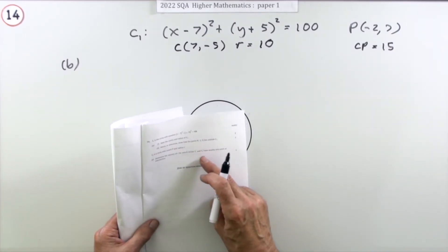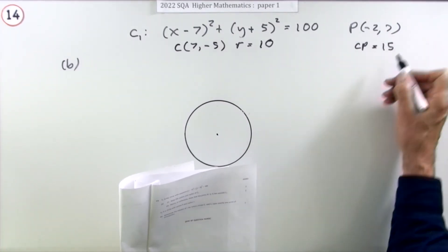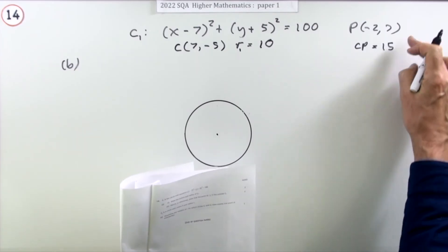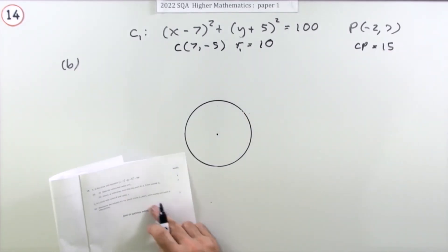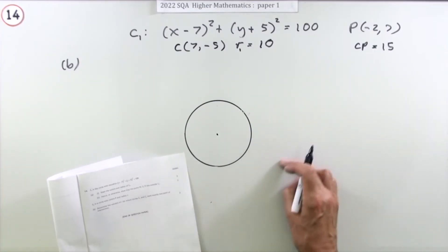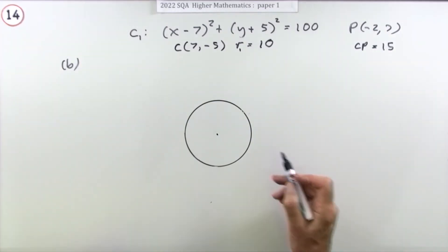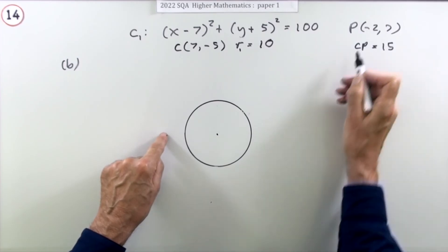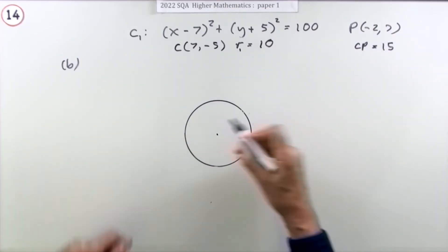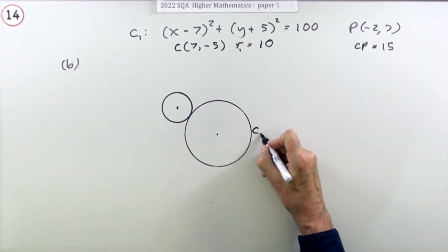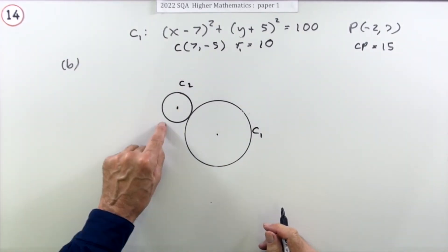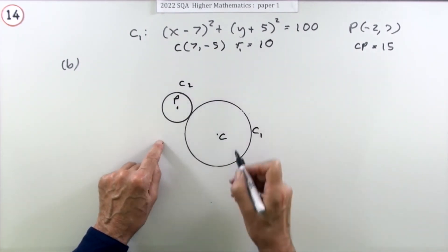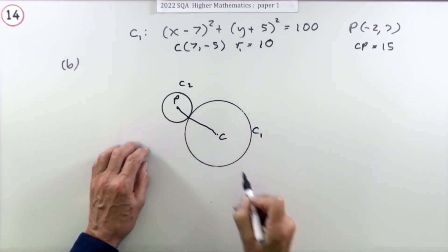Part B: determine the values of R for which circles C1 and C2 have exactly one point of intersection — so they're tangent circles. C2 is centred on P(-2, 7) with unknown radius R. The centre of C1 is at (7, -5). We already know the distance between the two centres is 15, and the radius of C1 is 10.